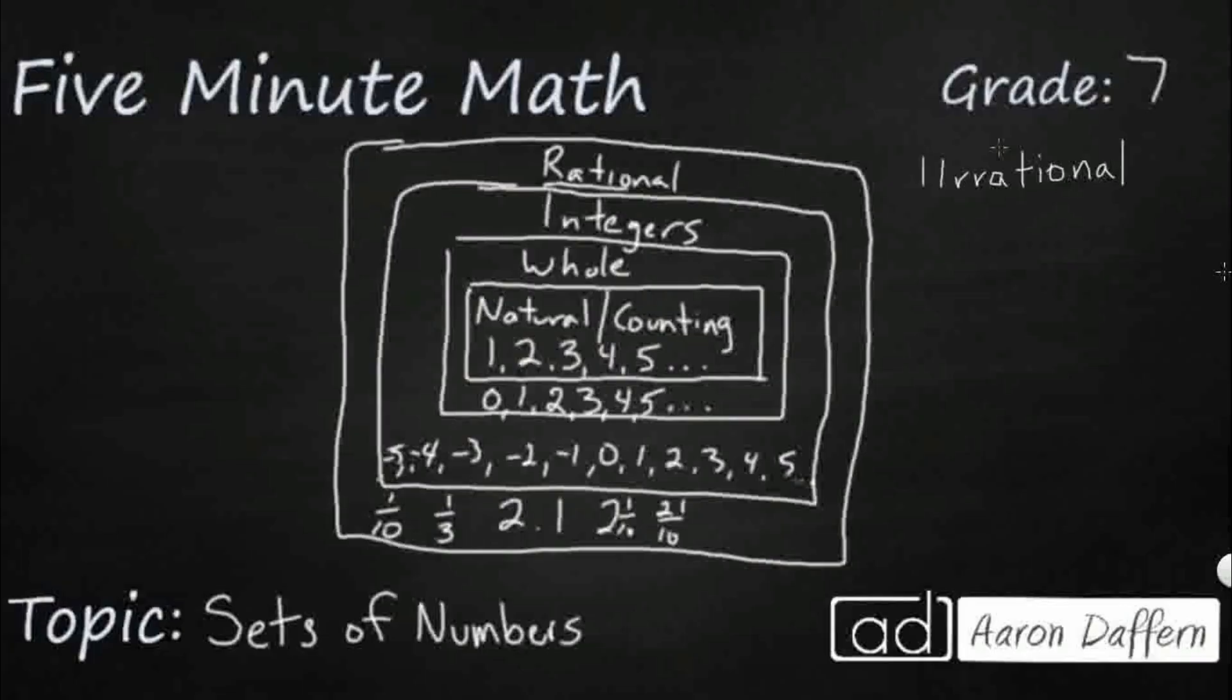Those are called irrational numbers. So think of these as a whole other set of numbers. So 'ir' is a prefix that means 'not'. So not rational, cannot be viewed as a ratio. So for example, pi is a number that goes on forever. We cannot represent it with a fraction or ratio, even though sometimes we'll give an approximation of about 22 over 7. That's just an approximation.